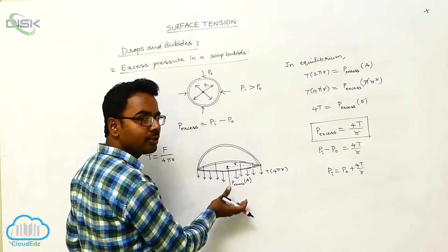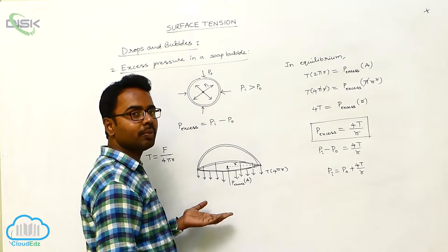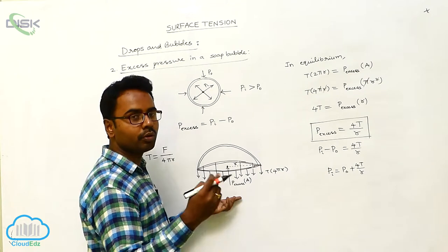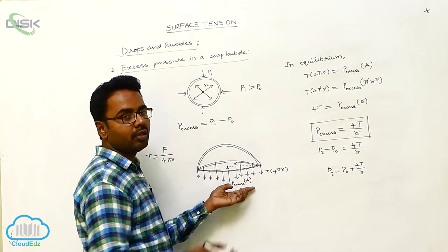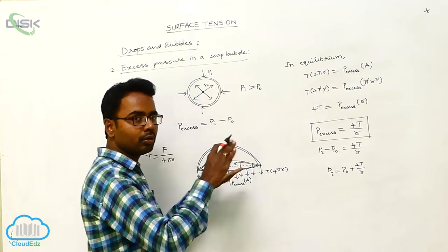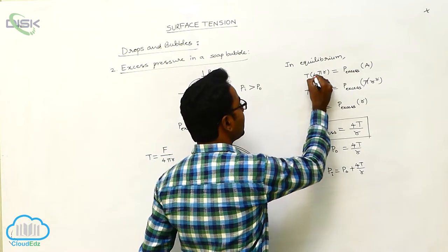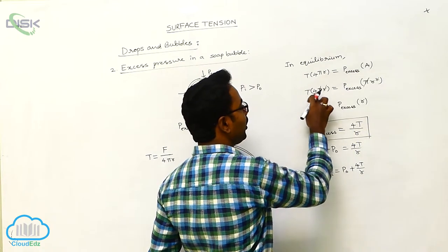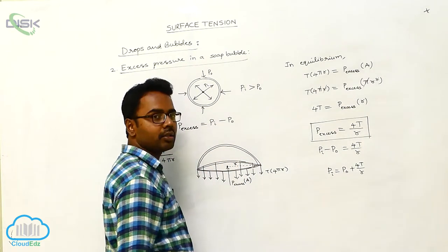At the same time, the upper half is experiencing a force due to the excess pressure. The force due to excess pressure is P_excess into A. Since pressure equals force divided by area, force equals pressure into area. So excess pressure into area gives the force due to excess pressure in the upward direction. In equilibrium, upward force equals downward force: T into 4πR equals P_excess into A, where area is πR².